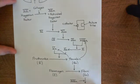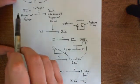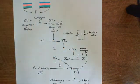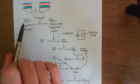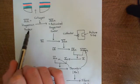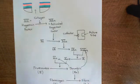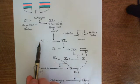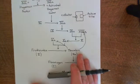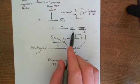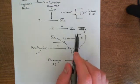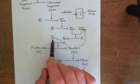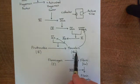We've discussed the intrinsic pathway, which is initiated when you have exposed collagen, which is exposed to the constituents of the blood, specifically to factor 12, or Hageman factor, which is then activated by collagen to factor 12a. Factor 12a activates factor 11 to factor 11a, which in turn activates 9 to 9a, which combines with its cofactor 8a to convert 10 to 10a, and 10a combines with its cofactor 5a to convert prothrombin to thrombin.